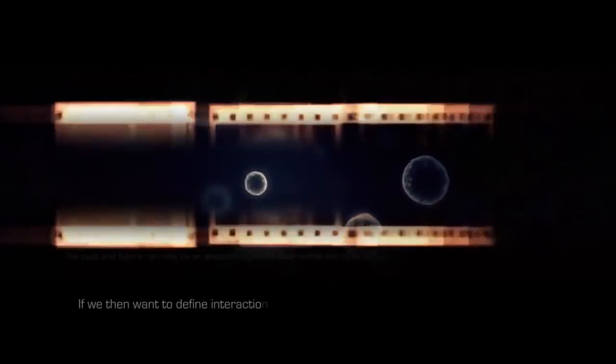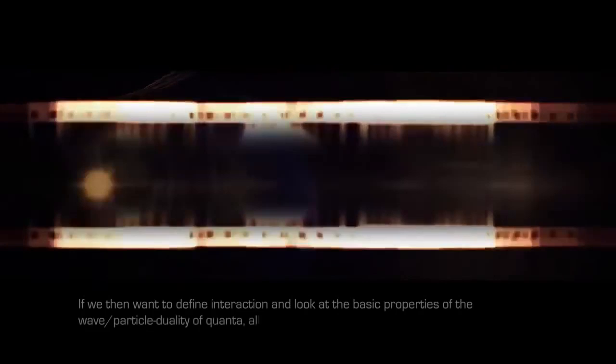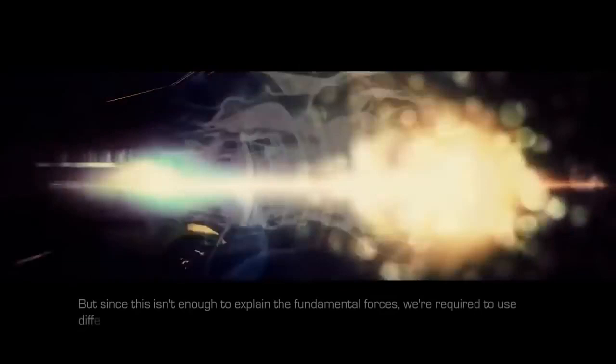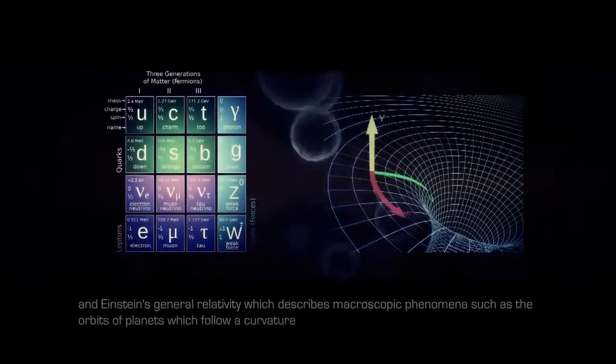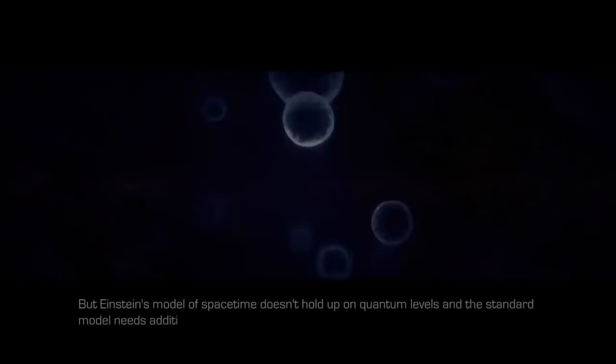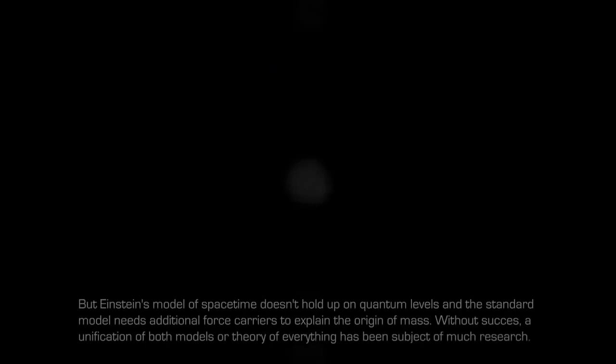If we then want to define interaction and look at the basic properties of the wave-particle duality of quanta, all interactions would consist of interference and resonance. But since this isn't enough to explain the fundamental forces, we are required to use different models. This includes the standard model, which mediates the dynamics of the known subatomic particles through force carriers, and Einstein's general relativity, which describes macroscopic phenomena such as the orbits of planets, which follow a curvature or ellipse in space and a helix in spacetime. But Einstein's model of spacetime doesn't hold up on quantum levels, and the standard model needs additional force carriers to explain the origin of mass. Without success, a unification of both models or theory of everything has been subject of much research.